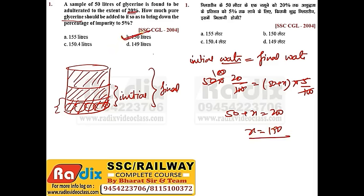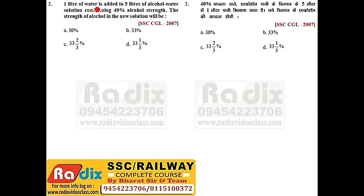Next question. 1 liter of water is added to 5 liters of alcohol-water solution containing 40% alcohol. We are adding water — that is the key important thing in allegation: what are you adding? We are adding 1 liter of water to 5 liters of solution containing 40% alcohol.